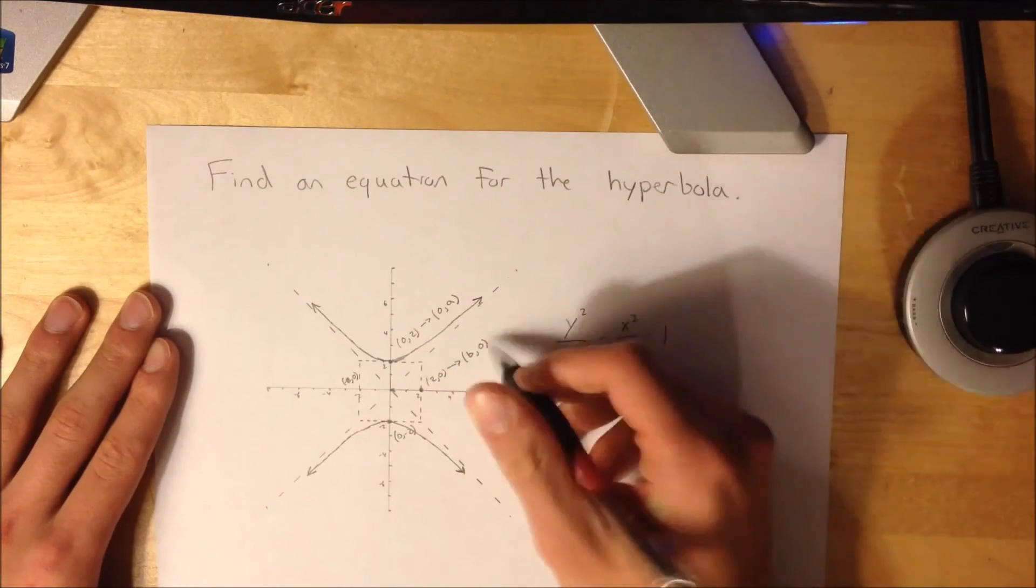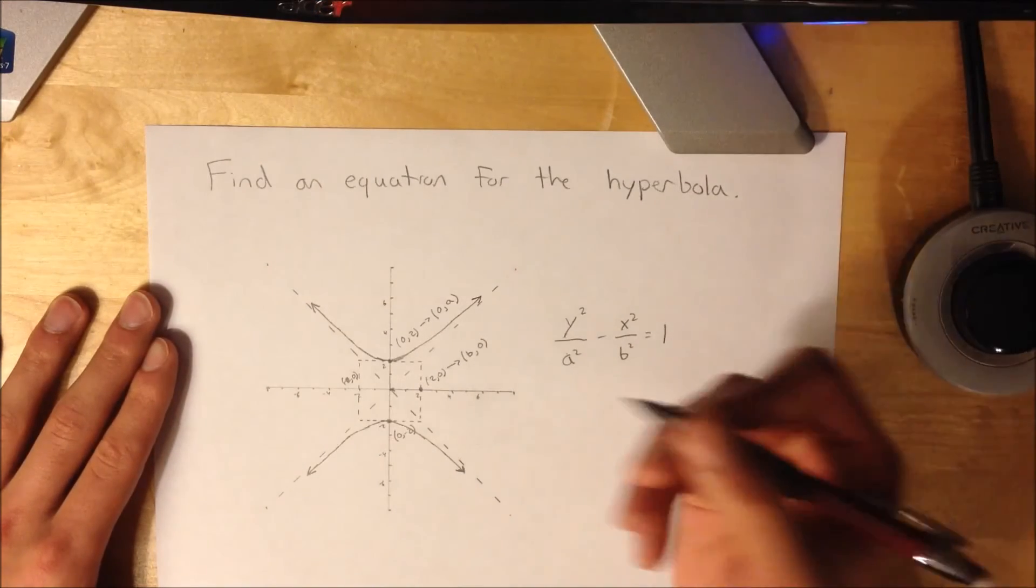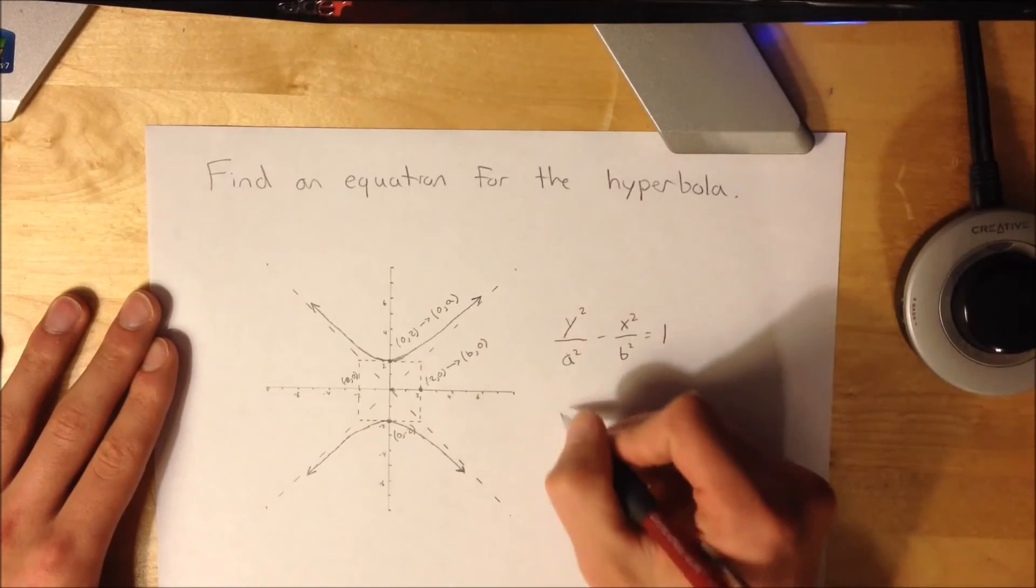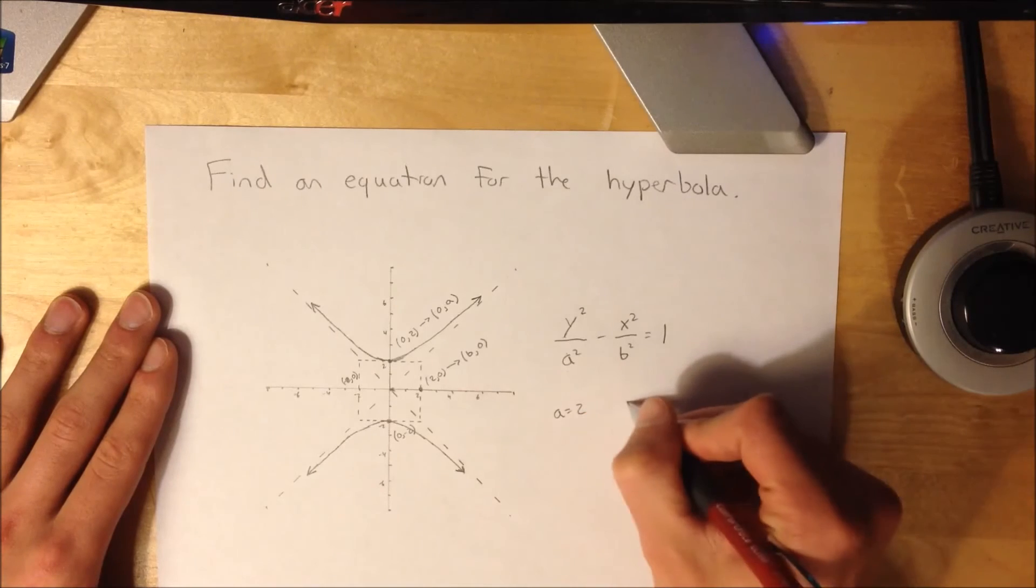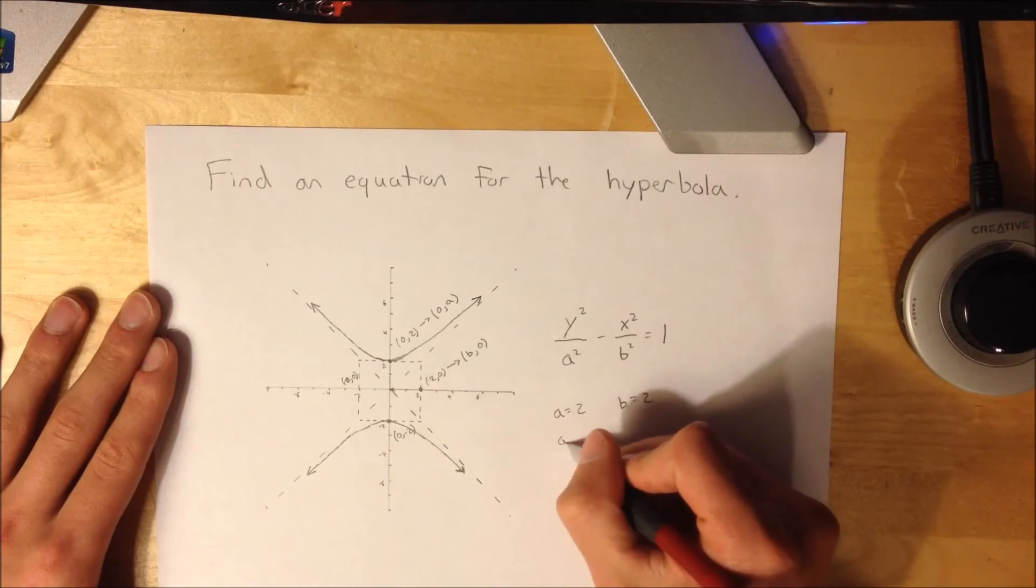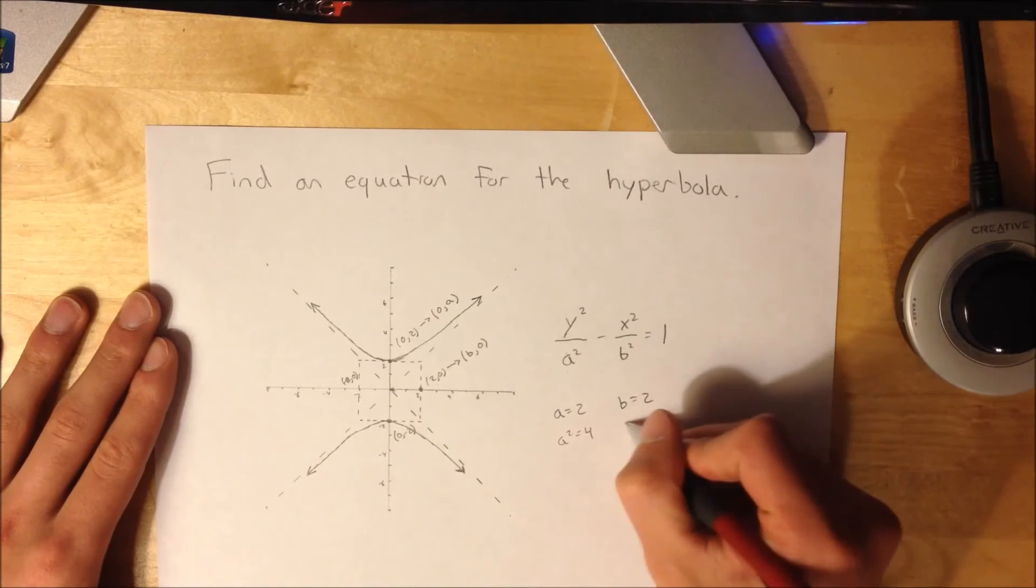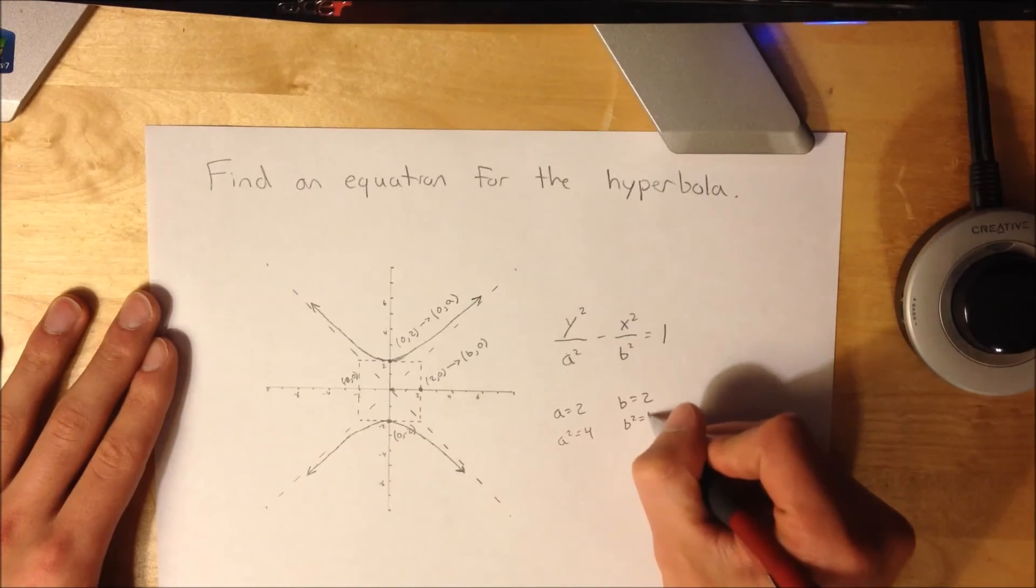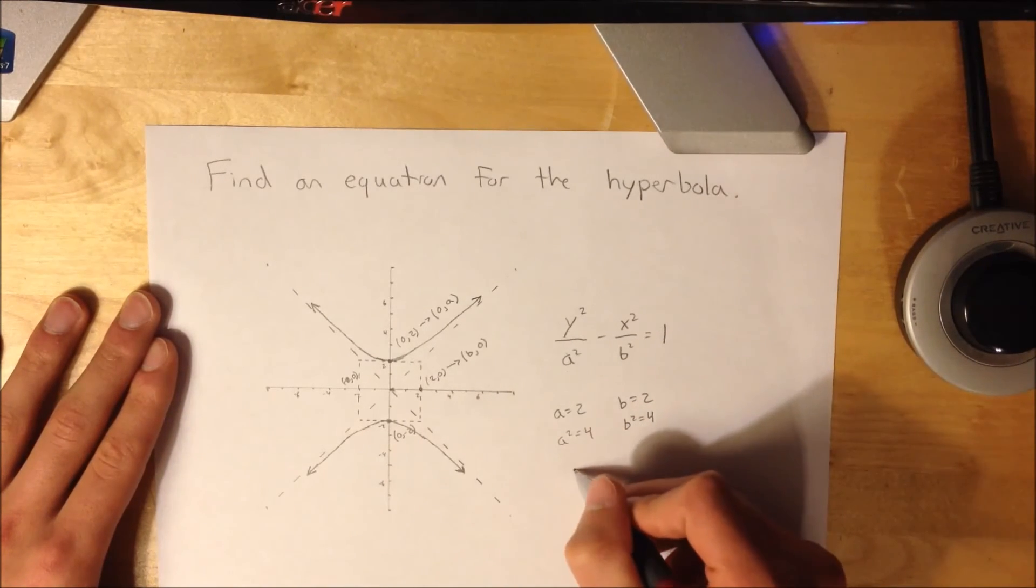So then your a would equal 2, and your b would equal 2. To figure out what the square value is, you square it, so your a squared is 4, and your b squared is 4, and you just plug it into the equation.